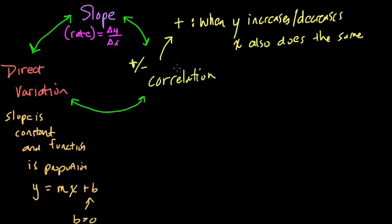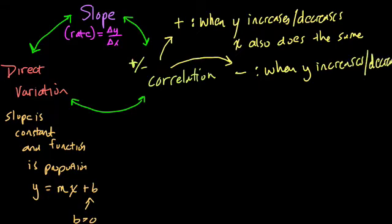A negative correlation means that the variables are moving in opposite ways. So when y increases or decreases, x does the opposite. If y is increasing, x is decreasing. If y is decreasing, then x is increasing. Let's look at one or two examples.